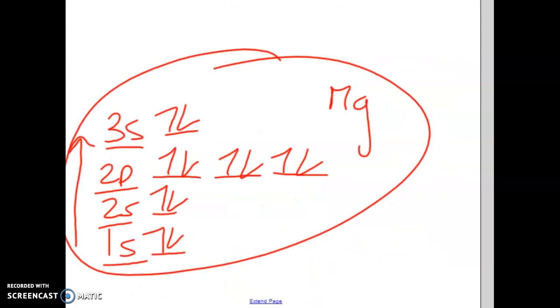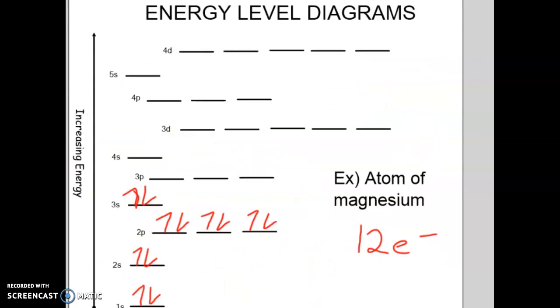So going back for a second, let's go back to magnesium. Magnesium's valence electrons, remember it's the highest n number, s and p. So here's energy level number one, energy level number two, energy level number three. So this is magnesium's valence electrons. If you remember, magnesium is in group number two. So when we draw the Lewis structure, there's only two electrons that are in the valence shell. These are them right here.